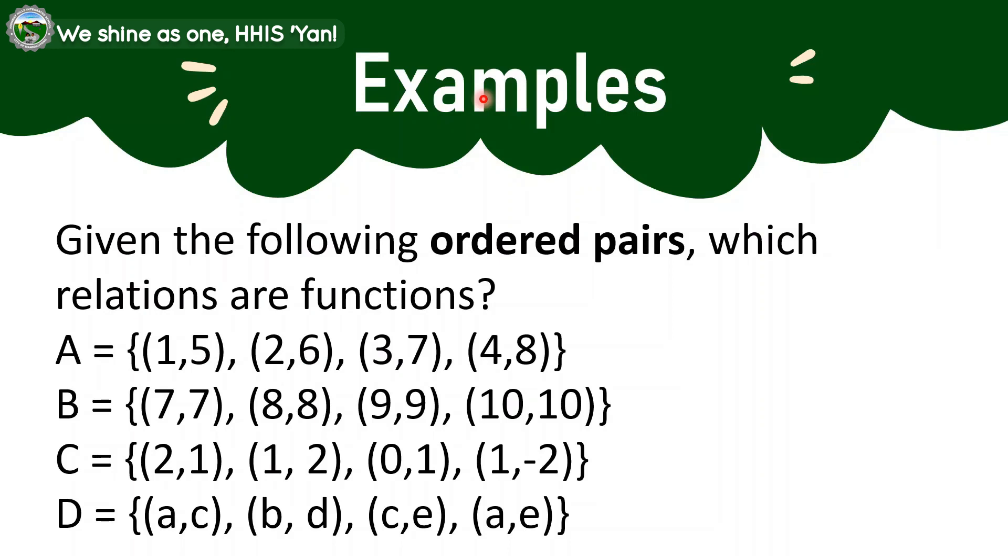Let us now proceed to examples. Given the following ordered pairs, which relations are functions? In set A, we were given the set of ordered pairs 1,5, 2,6, 3,7, 4,8. In this example, none of the elements of the domain is repeated. Hence, it is a function. Our domain in set A is the set of the first coordinates: 1, 2, 3, and 4. None of that is repeated. So again, it is a function.